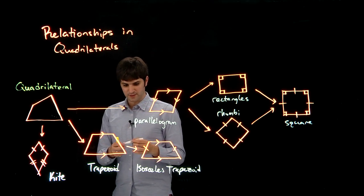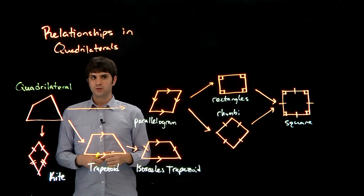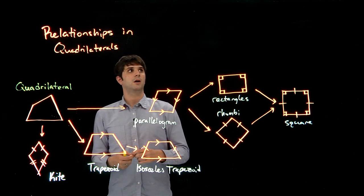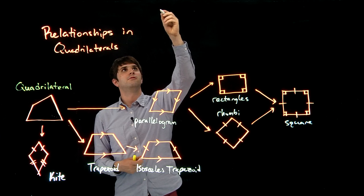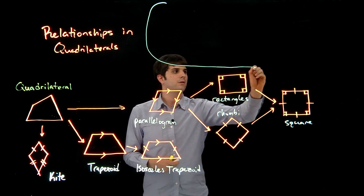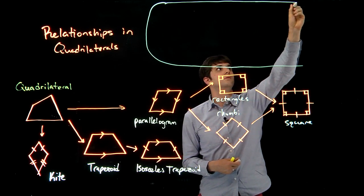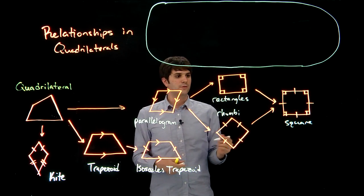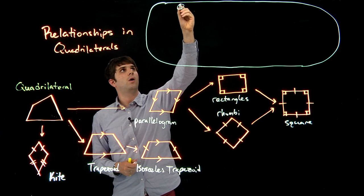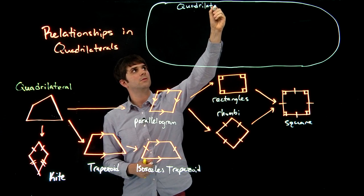So this is sort of an organizational method of seeing how quadrilaterals are related to each other. Let me draw a bit of a picture here. So let's say we have a very big world of quadrilaterals. So this is sort of quadrilateral land. So this is all quadrilaterals.